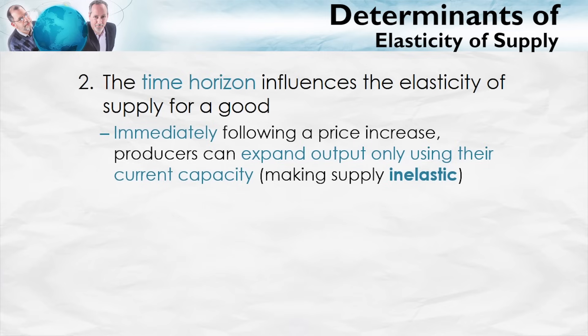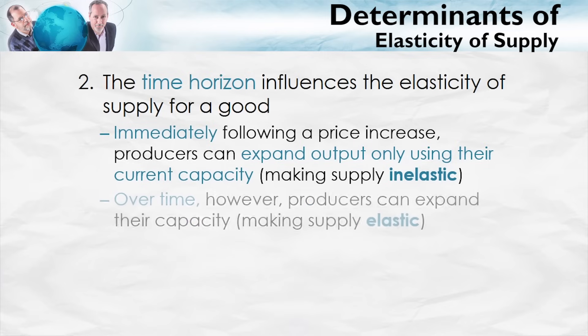Over time, however, producers can expand their capacity. So in the short run, the elasticity of supply tends to be more inelastic because it's harder to expand output at the same cost. Over time, because producers can expand their capacity, the supply curve tends to be more elastic. Supply curves tend to be more elastic the more time you give producers to respond to the price.